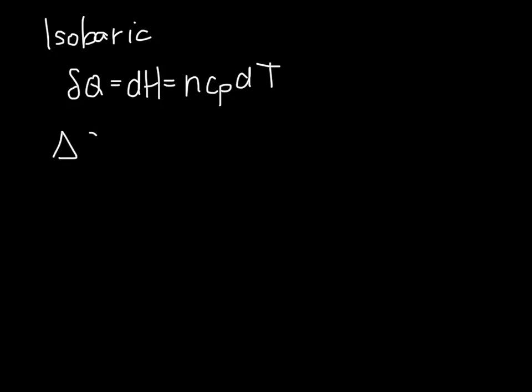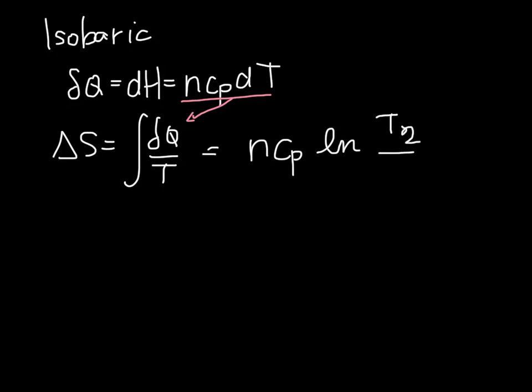And so delta S looks like this, and we're going to plug this part in here. And we end up then with n Cp ln of T2 over T1. So this looks similar to what we just found, only we have Cp instead.